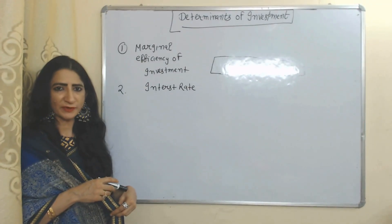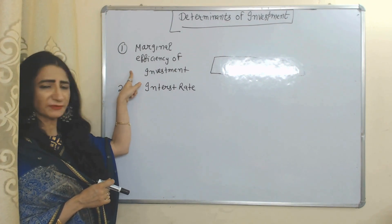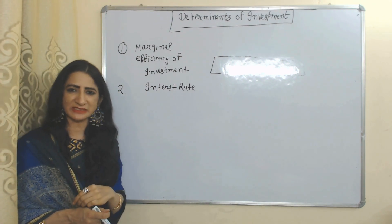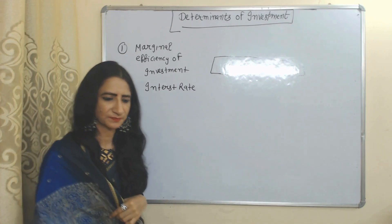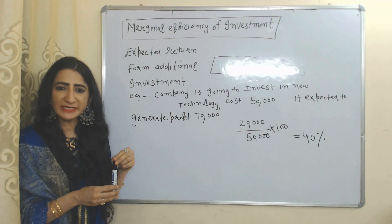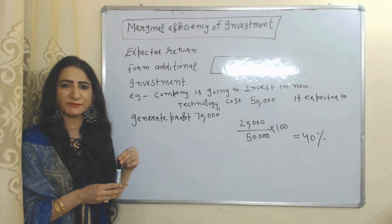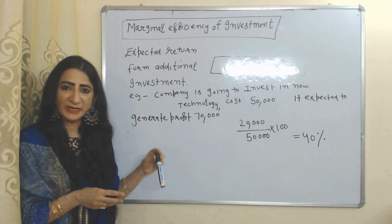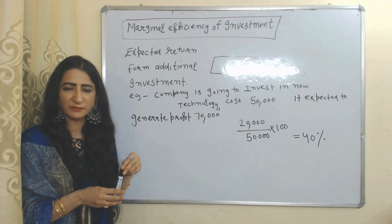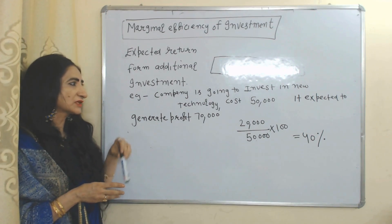Now we will discuss the determinants of investment. Investment mainly has two determinants: marginal efficiency of investment and interest rate. What is marginal efficiency of capital? The expected return from additional investment is called marginal efficiency of capital.